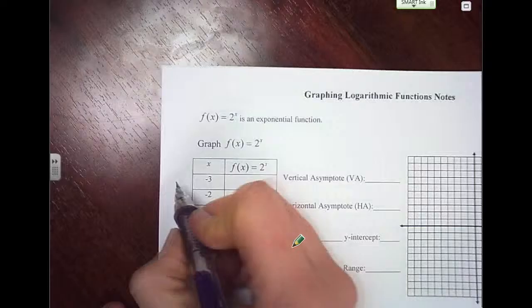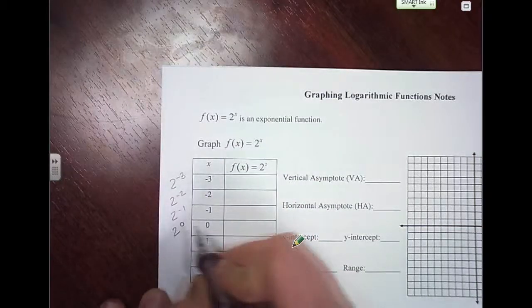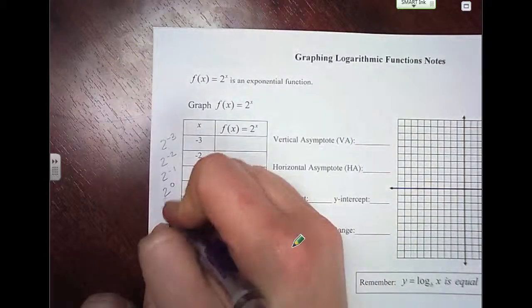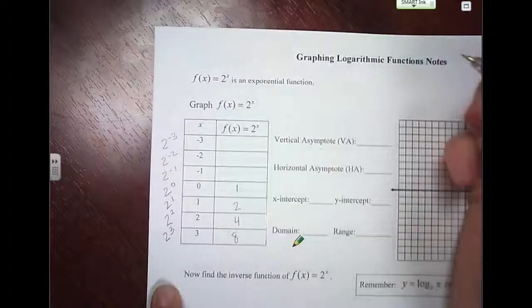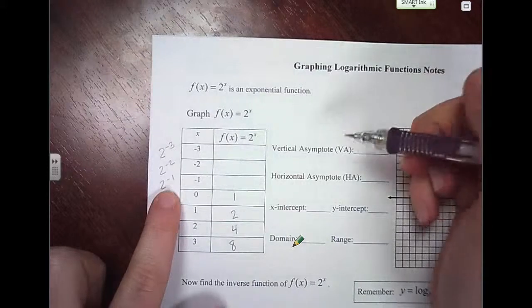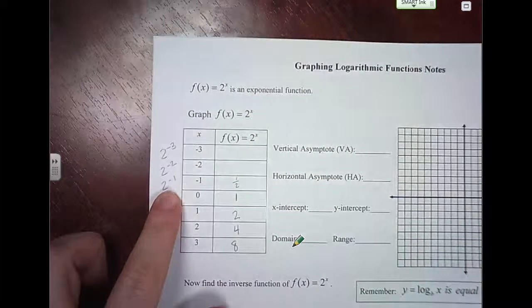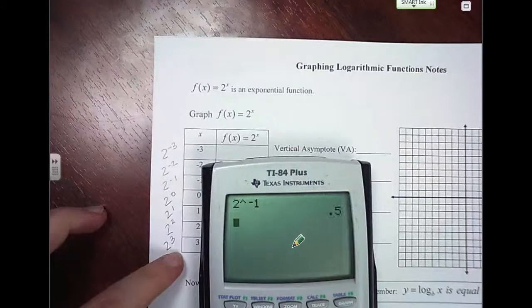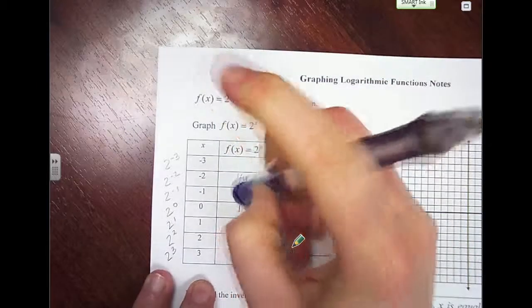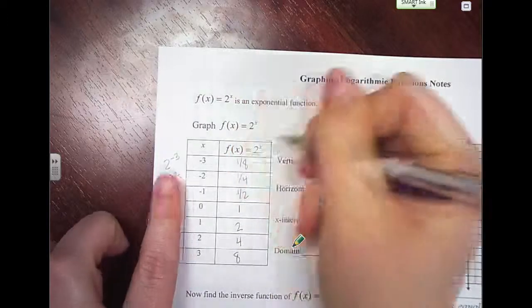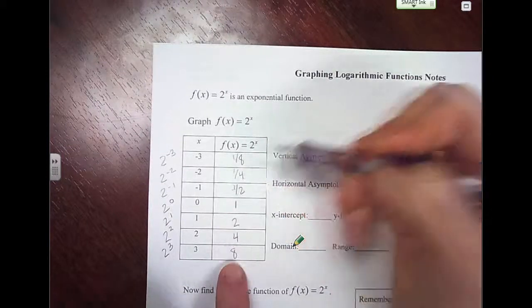They give us x values, so we're going to look for 2 to the negative 3, 2 to the negative 2, 2 to the negative 1, 2 to the 0 — anything to the 0 power is 1. 2 to the first is 2, 2 to the second is 4, 2 to the third is 8. For negative exponents, 2 to the negative 1 is 1 over 2 (or 0.5), so we get 1 fourth and 1 over 8. So you've got whole numbers 1, 2, 4, 8 and fractions 1/2, 1/4, and 1/8.